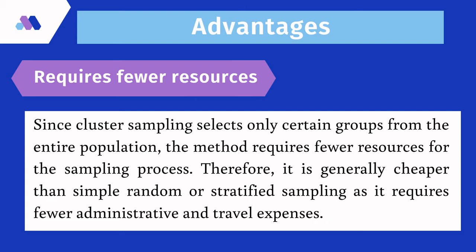Requires fewer resources: cluster sampling selects only certain groups from the entire population. The method requires fewer resources for the sampling process. Therefore, it is generally cheaper than simple random sampling and stratified random sampling, easy for administration, and it minimizes traveling expenses.